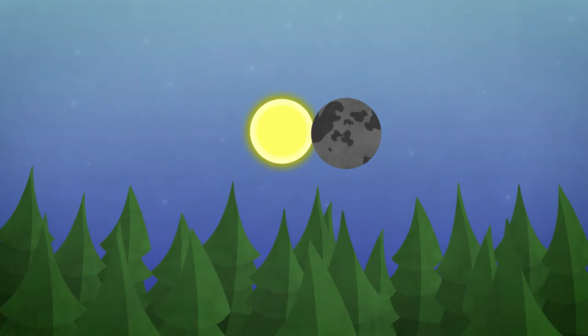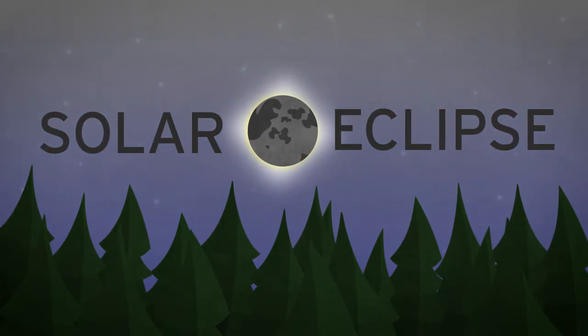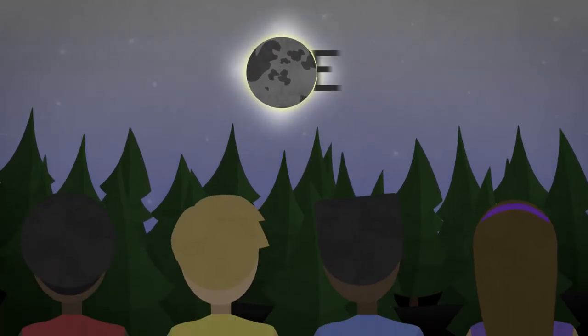A solar eclipse happens when the sun is blocked by the moon. During the eclipse, you can see the sun gradually disappear as the moon passes in front of it.